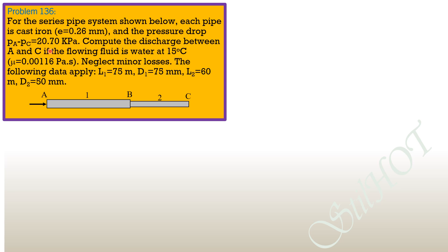The total head loss from A to C equals the pressure drop divided by the specific weight of the flowing liquid, which is water. The specific weight of water is assumed to be 9.81 kilonewtons per cubic meter. So Q1 equals Q2, and the total head loss is HF1 plus HF2.